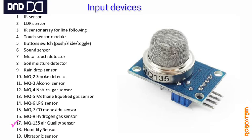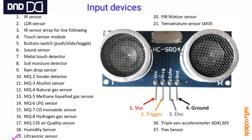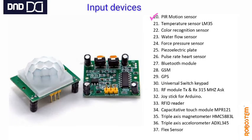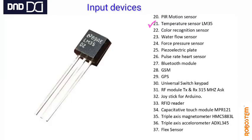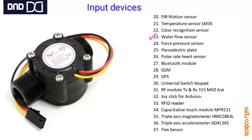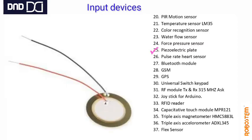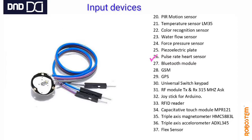MQ135 is an air quality sensor. Next is a humidity sensor — it senses the amount of humidity in the air. Ultrasonic sensor is used most of the time for detecting objects. PIR motion sensor detects any motion in the region. LM35 is a temperature sensor — very small but very effective. Color recognition sensor detects all seven colors, used for color detection. Water flow sensor detects the amount of water flow. Force pressure sensor measures applied force — it is a piezoelectric plate that gives current when pressed.